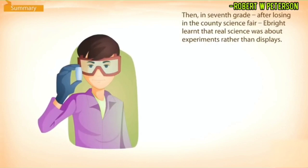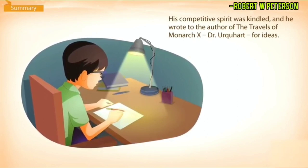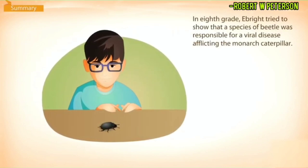In seventh grade, after losing in the county science fair, Ebright learned that real science was about experiments rather than displays. His competitive spirit was kindled, and he wrote to the author of 'Travels of the Monarch X,' Dr. Urquhart, for ideas.